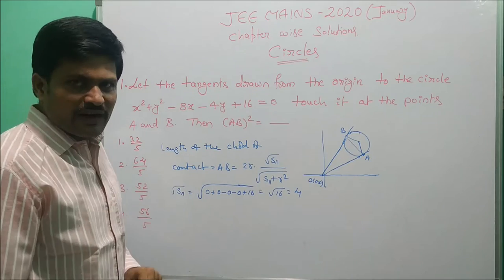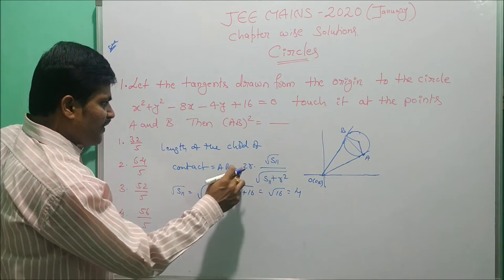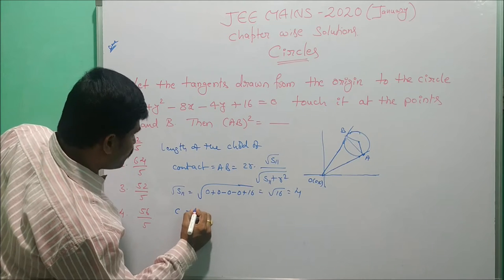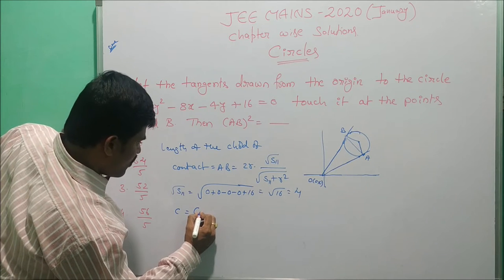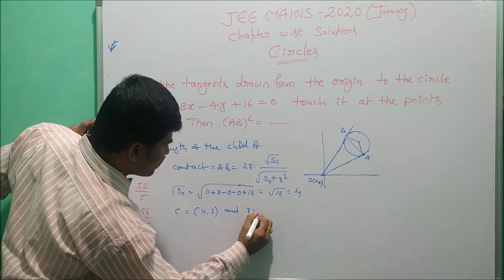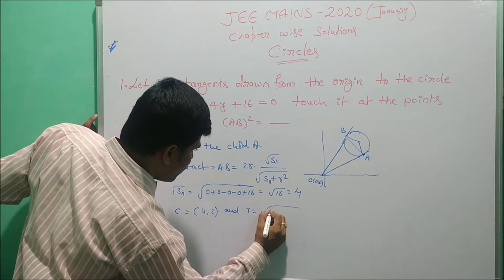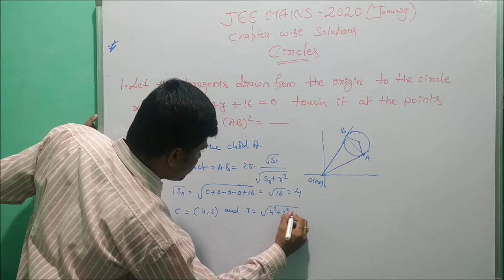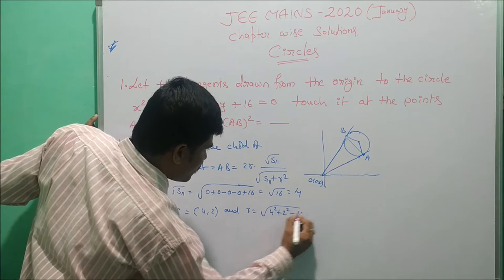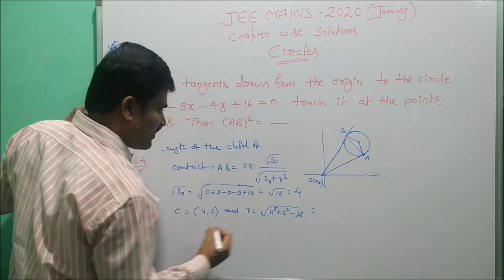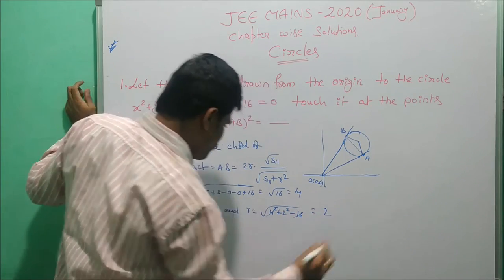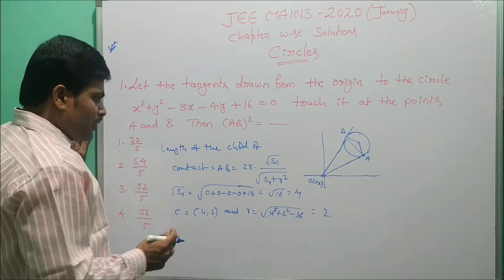Similarly, we find the radius. Center C equals (4, 2) and radius R = √(4² + 2² - 16) = √(16 + 4 - 16) = √4 = 2. So the radius is 2.